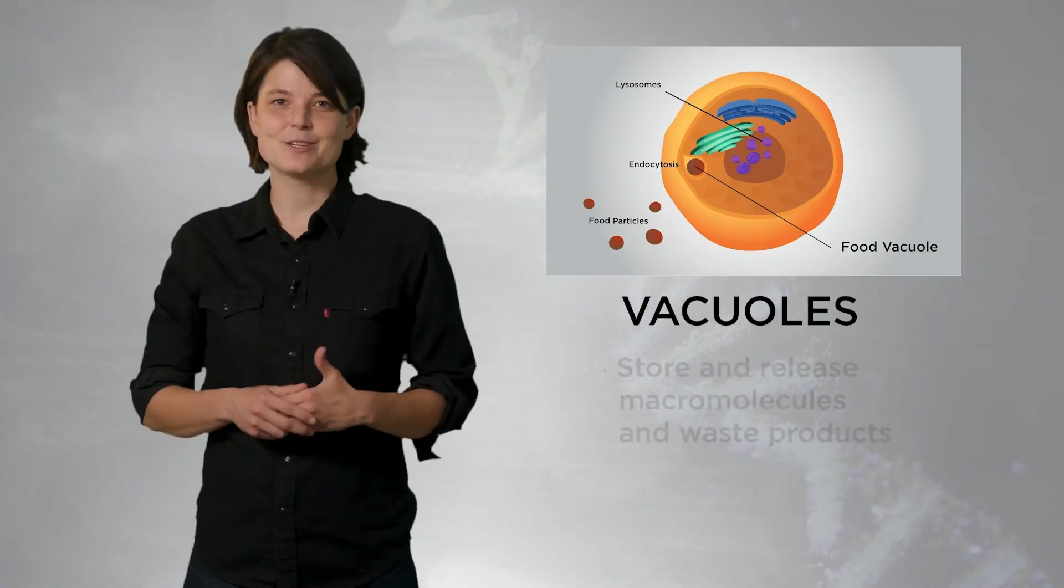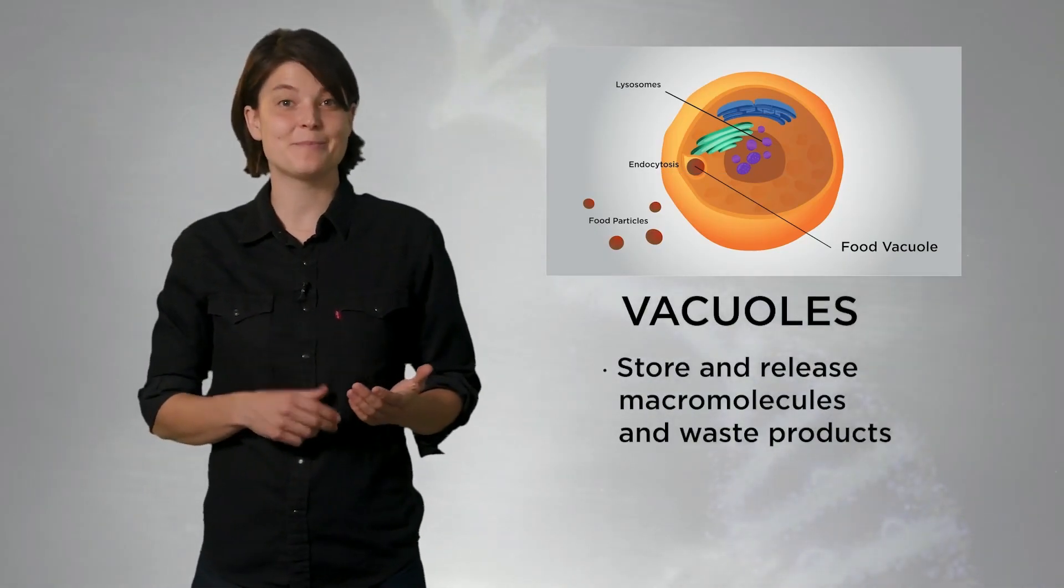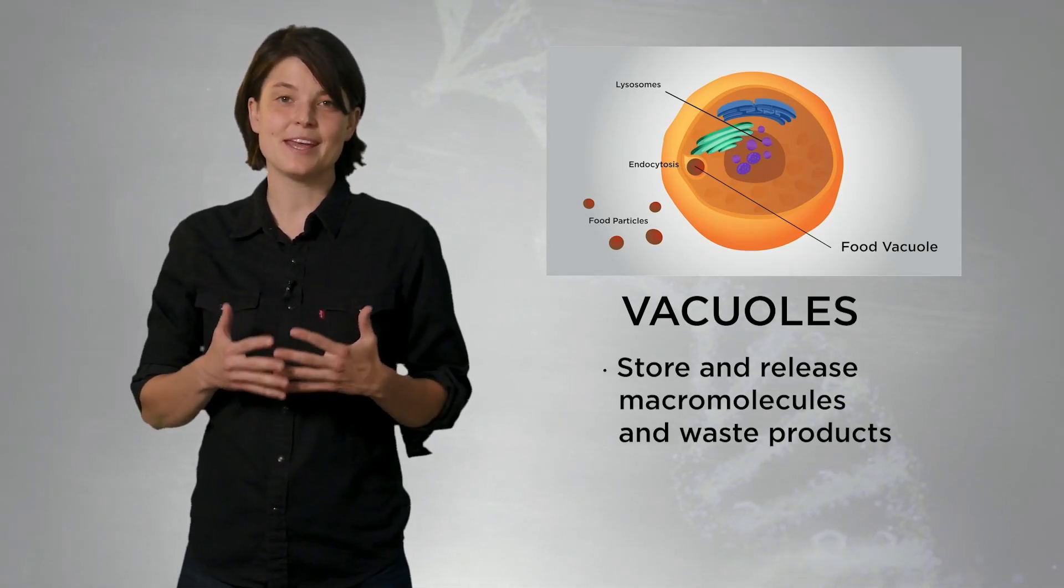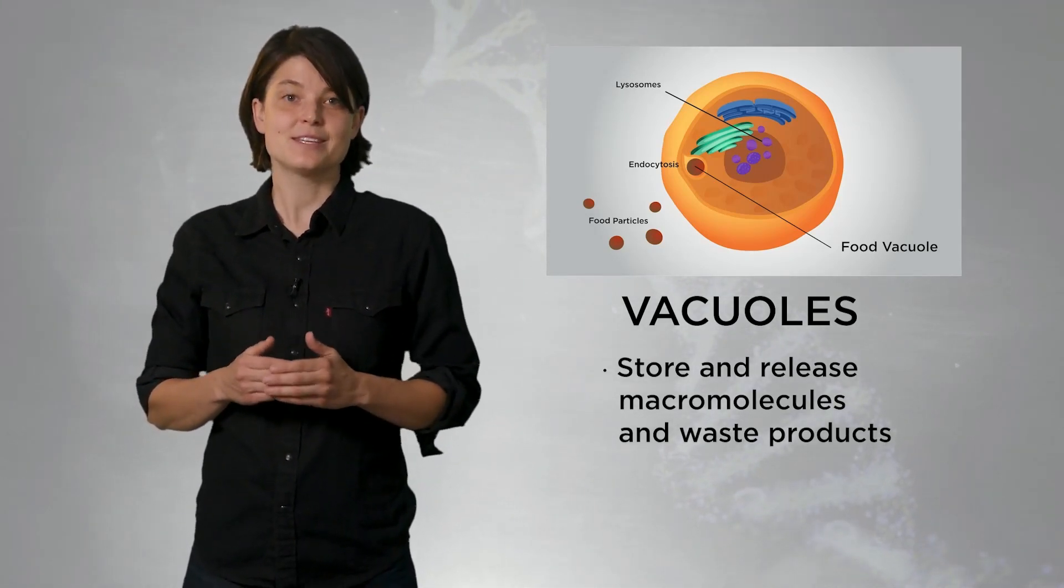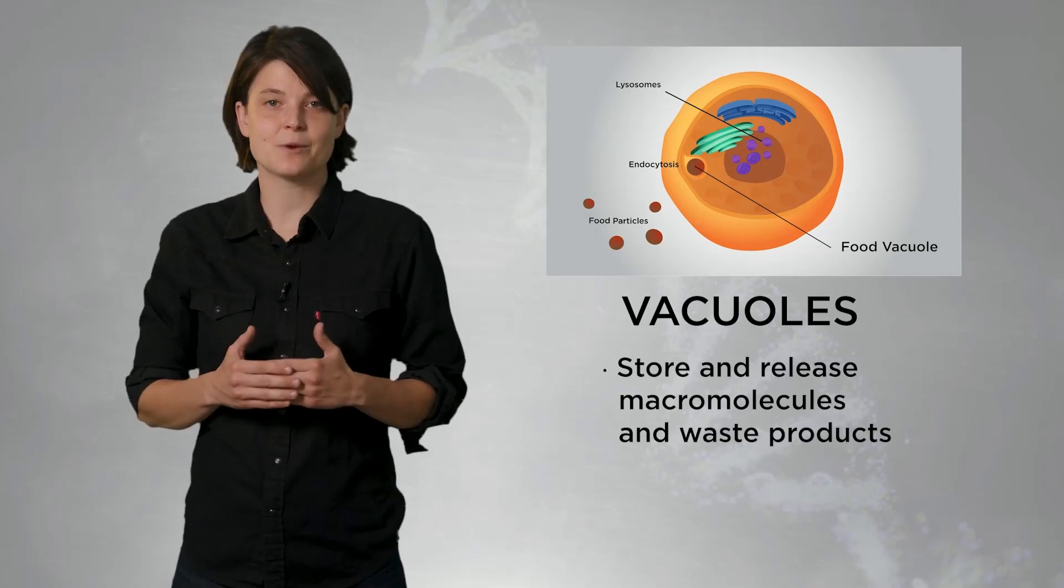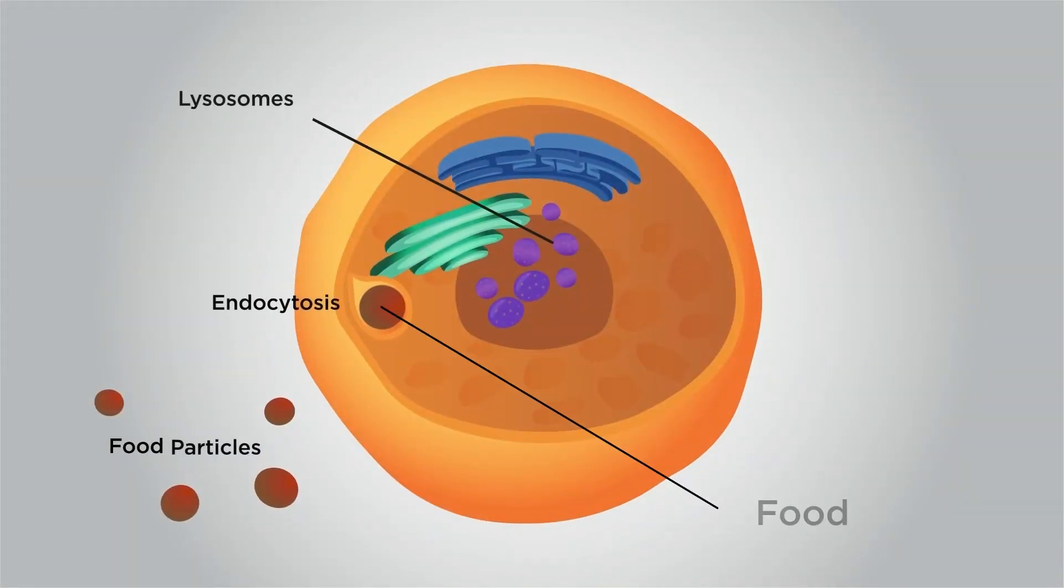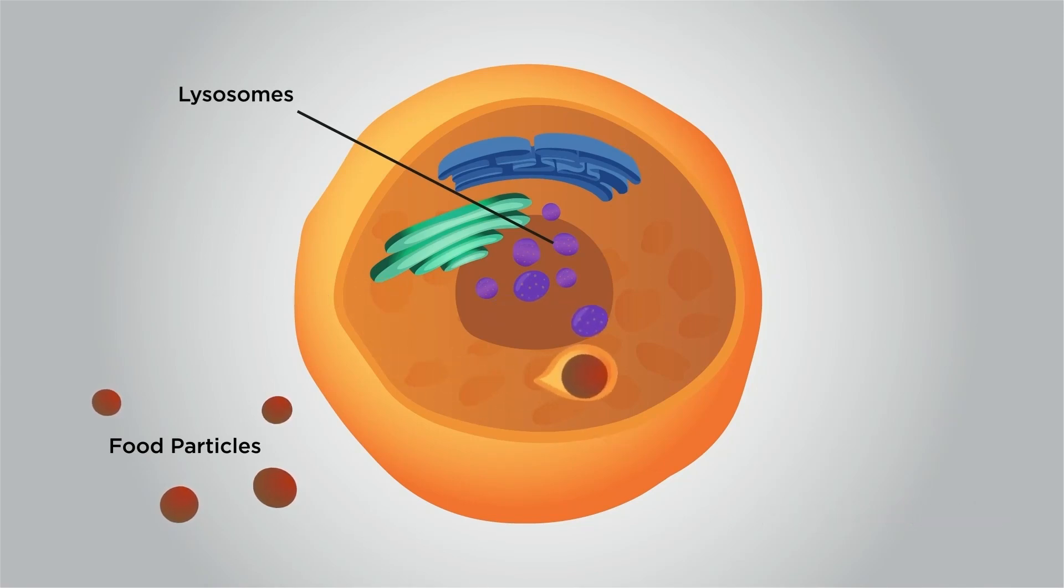Vacuoles are vesicles that come from the endoplasmic reticulum and Golgi body. Vacuoles have many purposes. In animal cells, for example, they store and release macromolecules and waste products. A common type of vacuole in many protists is the food vacuole, which contains food that the unicellular organism has engulfed. Lysosomes fuse with the food vacuole and then digest its contents.